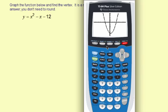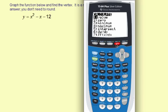The calculator can determine the vertex. You do that on the calculate menu, so I'm going to hit second then calculate, and we're going to use minimum because the vertex is the low point of this parabola.